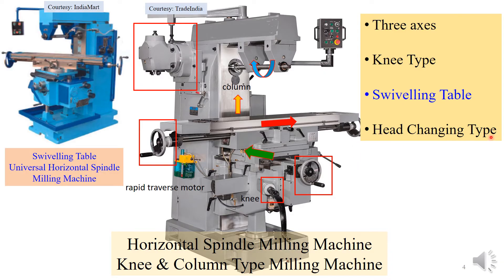Two more features to note. First, this is a head-changing type: this horizontal spindle milling machine can be converted into a vertical milling machine by changing to a vertical cutting head, so the cutter axis becomes vertical — the cutting heads can be exchanged. Second, this is a swiveling-type universal milling machine, where the table can be swiveled about the vertical axis by up to 45 degrees in both directions. This is especially useful for machining helical gears on a milling machine.